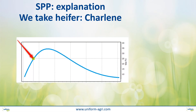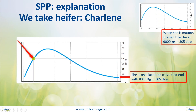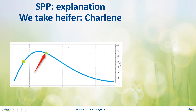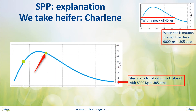The best way to understand it is with a concrete example. We have a heifer, Charlene, who is currently on a lactation curve. This is today's date. We know she's on the lactation curve that's going to end up with 8,000 kilos at 305 days. When she's mature, we can certify that she's going to have a peak of 45 kilos. As we move along the lactation curve — same story — she's on the same lactation curve, so we can efficiently predict her peak when she's mature: 45 kilos.